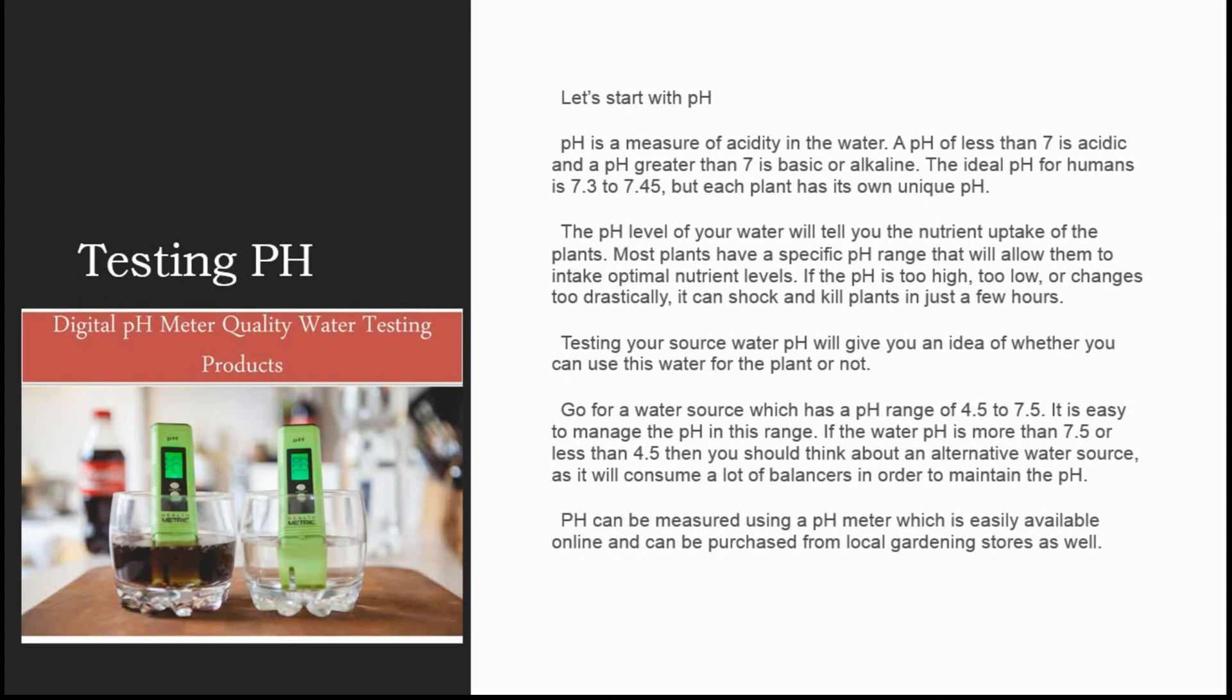It is easy to manage the pH in this range. If the water pH is more than 7.5 or less than 4.5, then you should think of an alternative water source as it will consume a lot of balancers to maintain the pH. pH can be measured using a pH meter which is easily available online and can be purchased from local gardening stores.